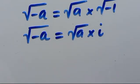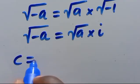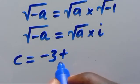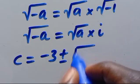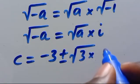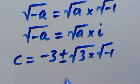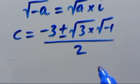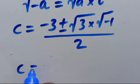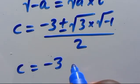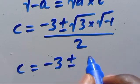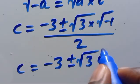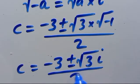So we can write this as c equals (−3 ± √3 · i) / 2, where i is the imaginary unit. This gives us two complex solutions.